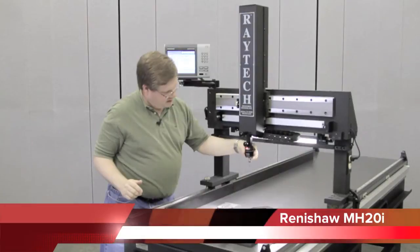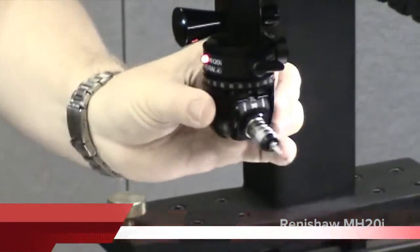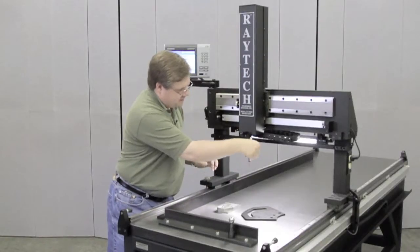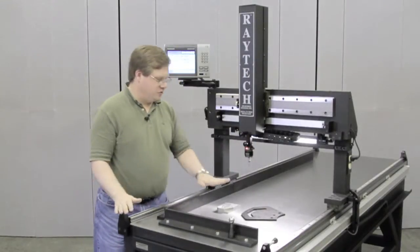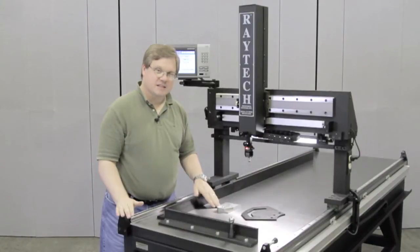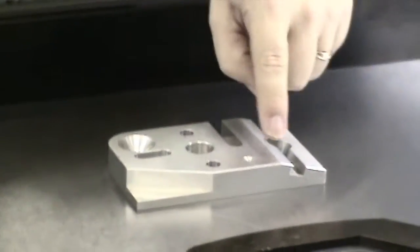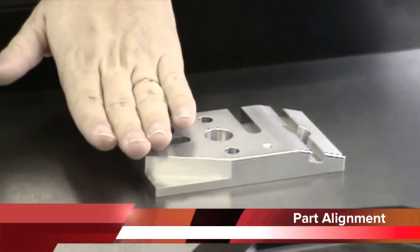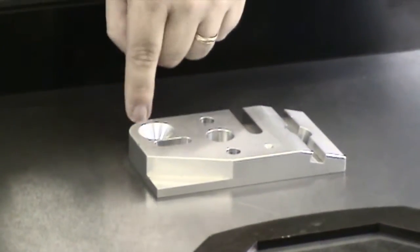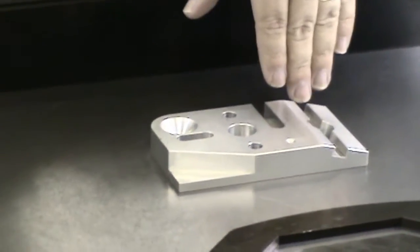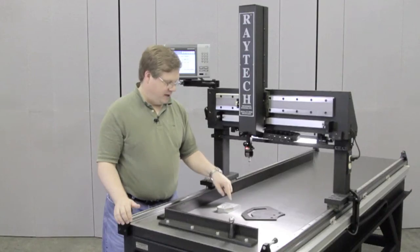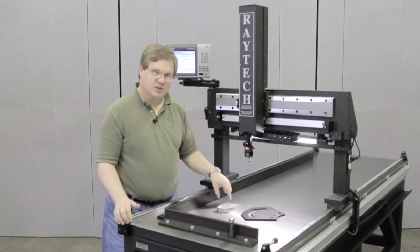The touch probe has a number of articulating positions that you can lock it into. To do a measurement on a part like this, first we're going to measure the flat surface of the plane to get it aligned, then we'll measure along an edge to get it straight, then we'll set a point at the end and make that corner our zero location.